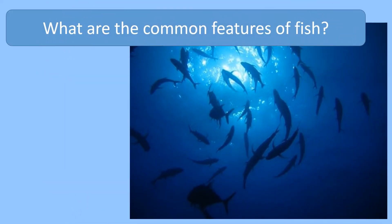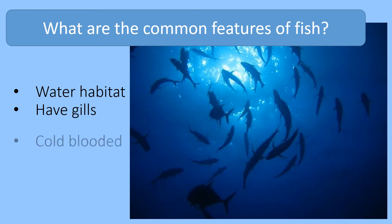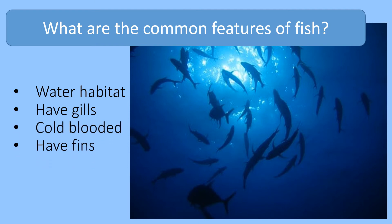So what are the common features of fish? All fish live in water habitats. They have gills to take in oxygen. They are cold-blooded. And they have fins to help them move through the water.